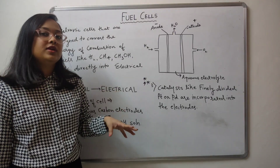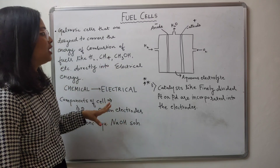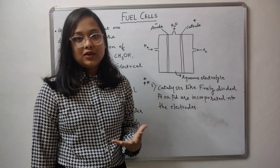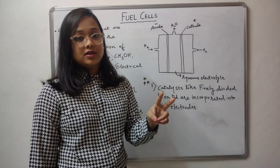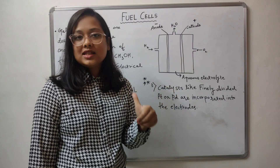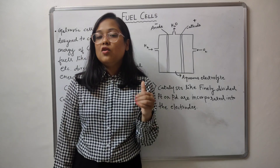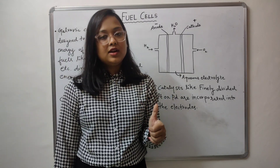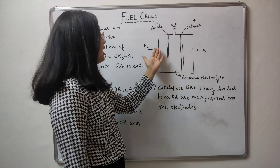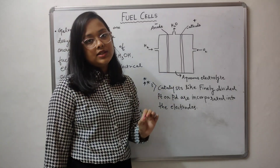Next, we need to know the components of fuel cells and how to draw a fuel cell figure. Whenever we deal with electrochemistry and cells, the two most important things are the electrodes and the electrolyte. You need to know what material is used to make the electrodes and what the electrolyte is. In the fuel cell, you have the anode (negatively charged) and the cathode (positively charged), along with an aqueous electrolyte.